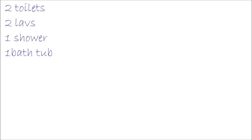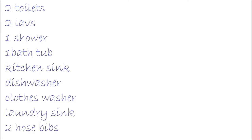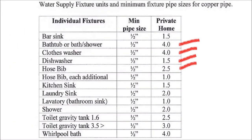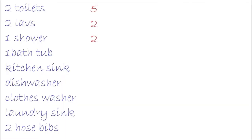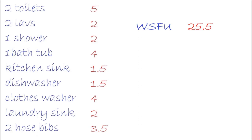So first we'll list all the plumbing fixtures that will be in the house. Then using the WSFU chart we'll assign a value to each fixture, and once that's done we simply add them up. Then using the WSFU to GPM conversion chart, we'll come up with our demand in gallons per minute. So we round up to the WSFU which is 30, and that comes out to be 23.3, which we'll round up to be 24.